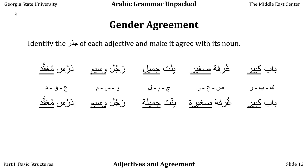Making an adjective agree in gender with its noun isn't especially difficult for these simple cases. You simply have to remember when a noun is feminine, even if it doesn't have ta' marbuta on it, like bint. That's the only really tricky part about this.